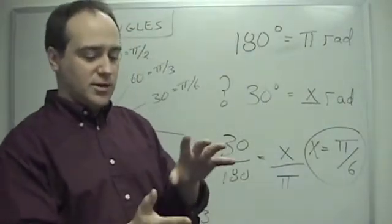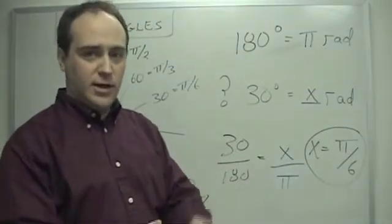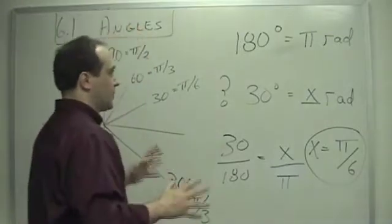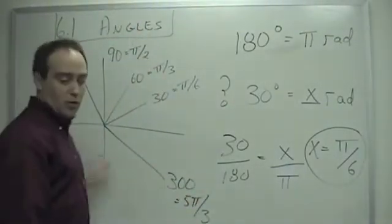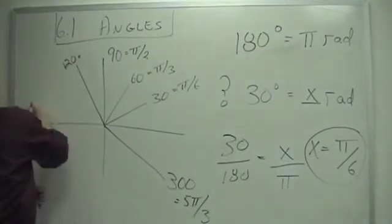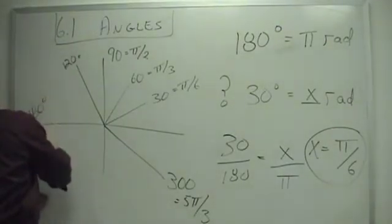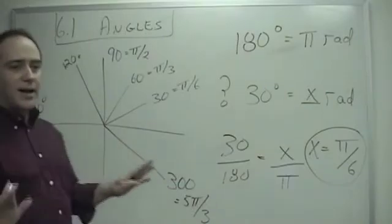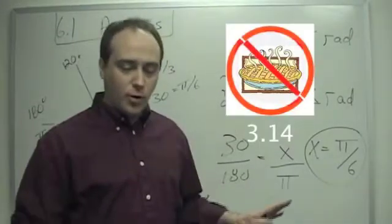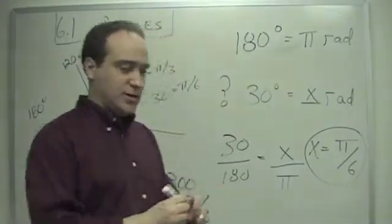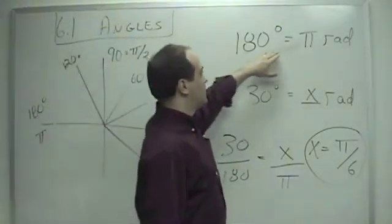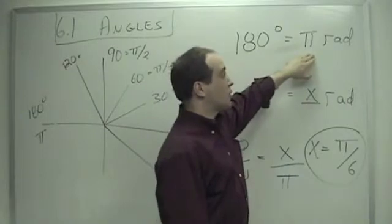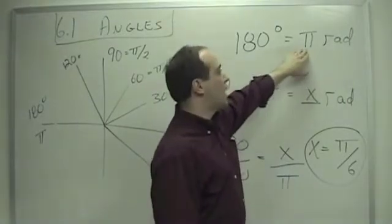Very often you're going to be given something in degrees and need radians, or radians and need degrees. Let's just remember that at 180 degrees, this is pi radians. Remember, pi is just a number, 3.14. It's convenient because it's an irrational number like e - we don't want to write all those decimal points. So 180 degrees is 3.14 dot dot dot, or pi radians.